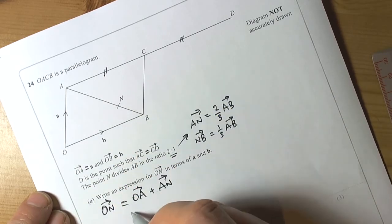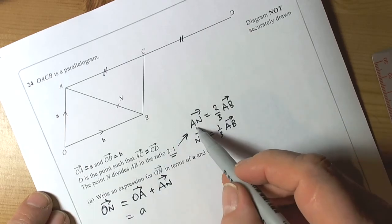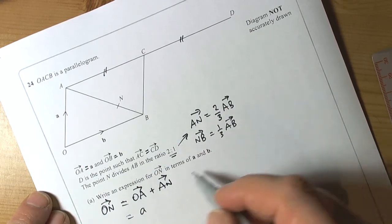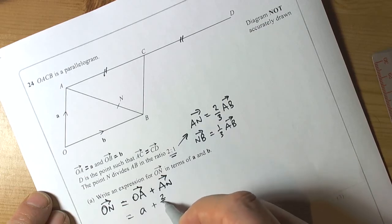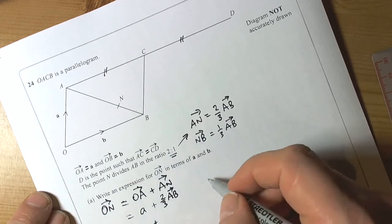So do we know OA? Yeah, we know it's vector a. Do we know AN? Well, we know that AN is 2 thirds of AB. So what we need to work out then is what the vector AB is.